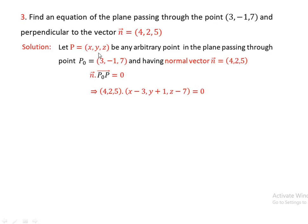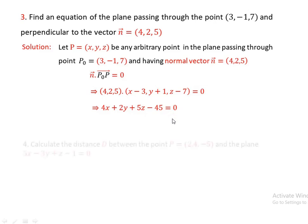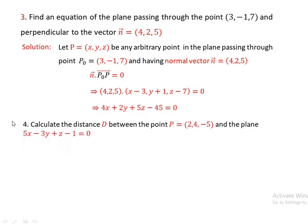Since n = (4, 2, 5) and P₀P = (x - 3, y + 1, z - 7), we get: 4(x - 3) + 2(y + 1) + 5(z - 7) = 0. Expanding and simplifying: 4x + 2y + 5z - 45 = 0.